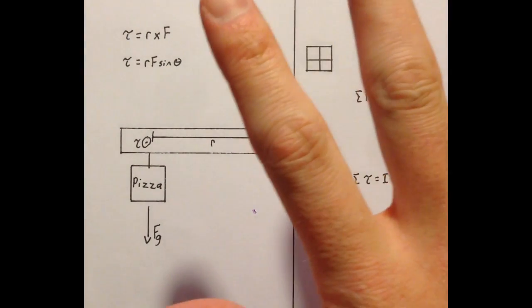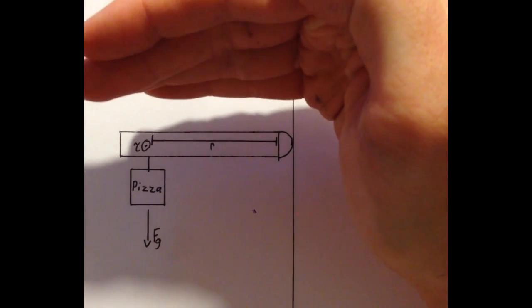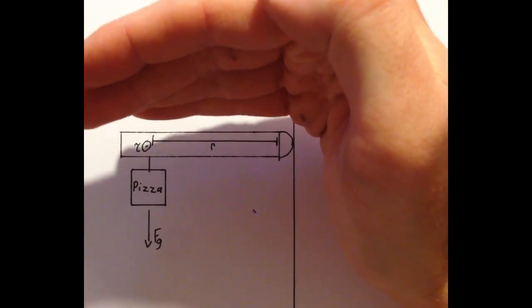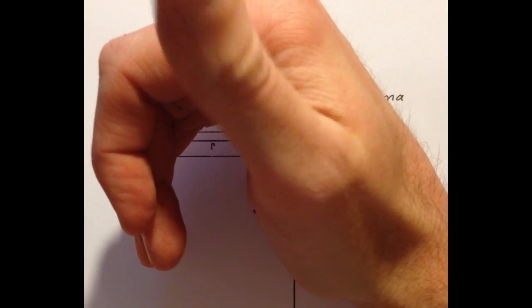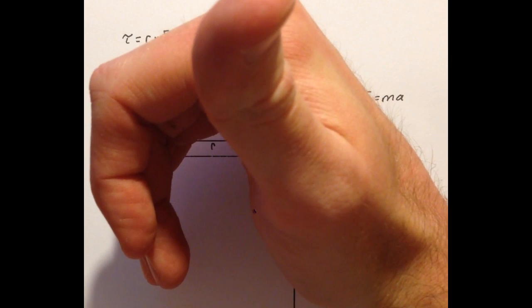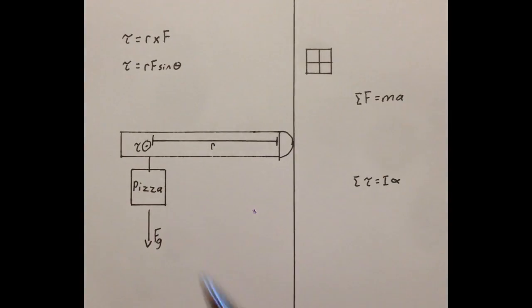In this case, using my right hand, I align my fingers with the radius. I then curl them down towards the force and stick out my thumb. My thumb points up out of the page, so torque is coming up out of the page.